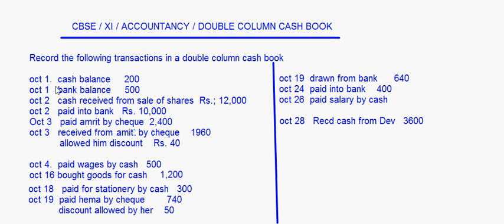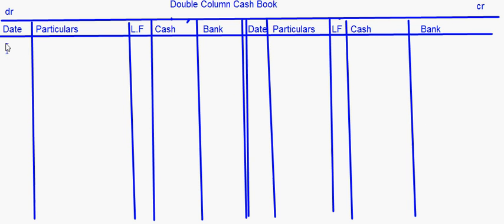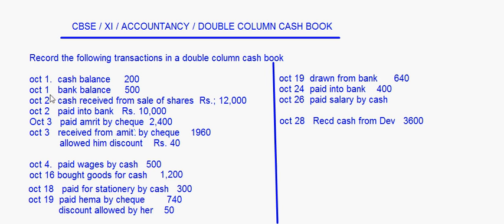The first entry is cash balance and bank balance — 200 and 500 rupees, date October 1st. In the cash book, you write balance brought down: cash is 200 and bank is 500.